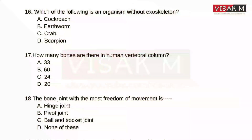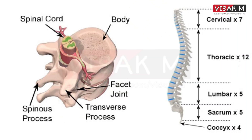How many bones are there in the human vertebral column? The right answer is Option A — 33.